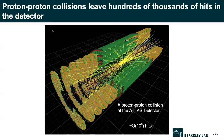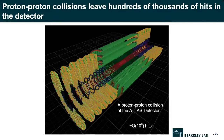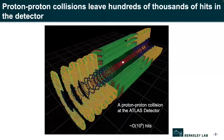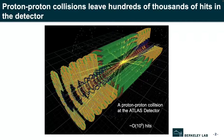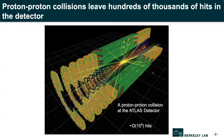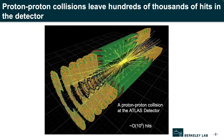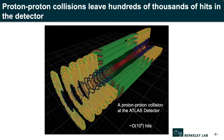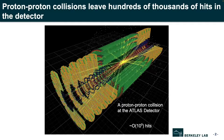Track-finding, or track reconstruction, is an essential task in the particle experiment. For people who are not familiar, here is an event display of a proton-proton collision that happens at the center of the ATLAS detector. The protons are coming from the Large Hadron Collider, the LHC, which is a circular accelerator in Geneva, Switzerland, with a circumference of 27 kilometers.